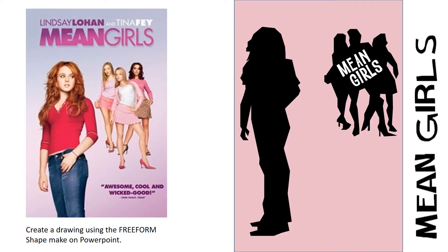Here we have an example for the film Mean Girls. We've got the original on the left and the Saul Bass inspired version on the right. Rather than using photographs, we've got this idea of simplistic shapes, and this has been drawn on PowerPoint. On the next few slides I'm going to show you how to do this — you're going to use the free form tool within the shapes section of PowerPoint, which allows you to draw your own shapes either over your own drawings or over photographs. We've got the appropriate typography taken from a free font website, and the simplistic pink background taken from the original poster.